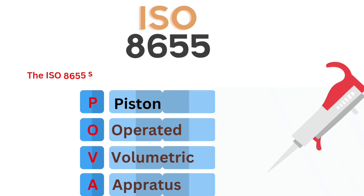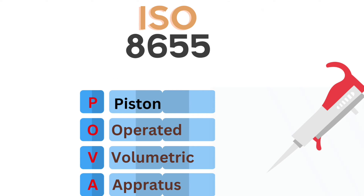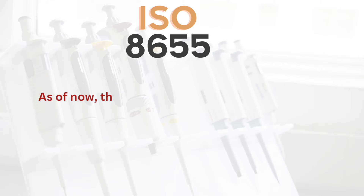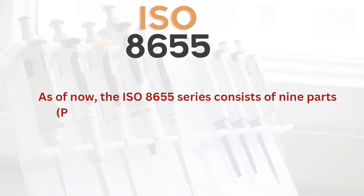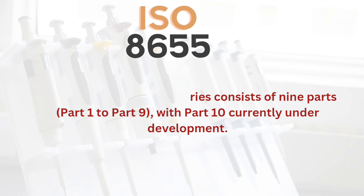The ISO 8655 series discusses piston-operated volumetric apparatus. As of now, the ISO 8655 series consists of 9 parts, Part 1 to Part 9, with Part 10 currently under development.